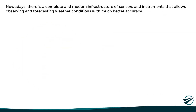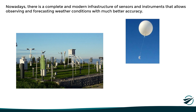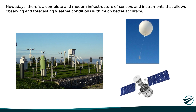Thanks to advances in technology, nowadays there is a complete and modern infrastructure of sensors and instruments that allows observing and forecasting weather conditions with much better accuracy. Within this infrastructure, we can highlight surface weather stations distributed throughout the planet, weather balloons used to measure temperature, pressure, wind, and humidity at different altitudes, and even satellites that send weather imagery on different channels.